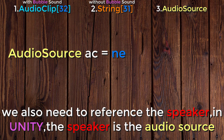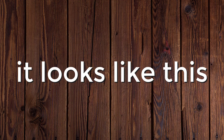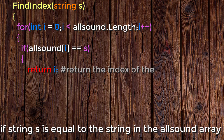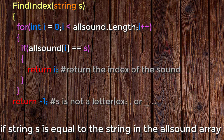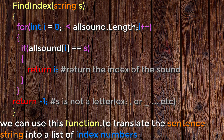We also need to reference the speaker — in Unity, the speaker is the audio source. After that, we need a findIndex function that takes in a string and returns an index referring to that string. First, take in the string s, then loop through the all-sound array. If string s equals the string in the all-sound array, it returns the index; otherwise, it returns minus one. We can use this function to translate the sentence string into a list of index numbers.